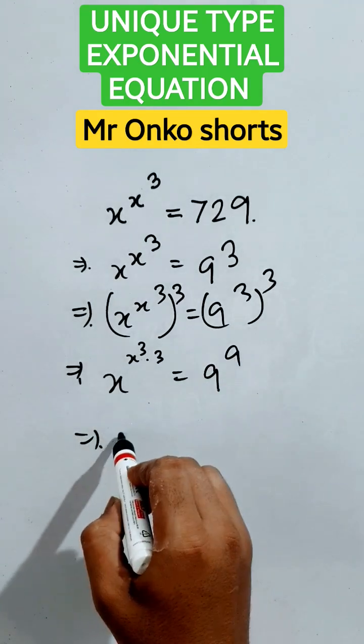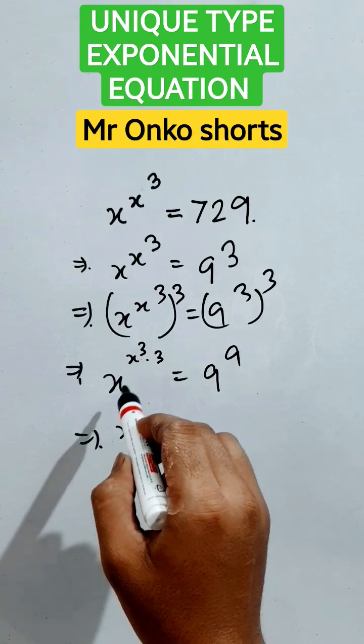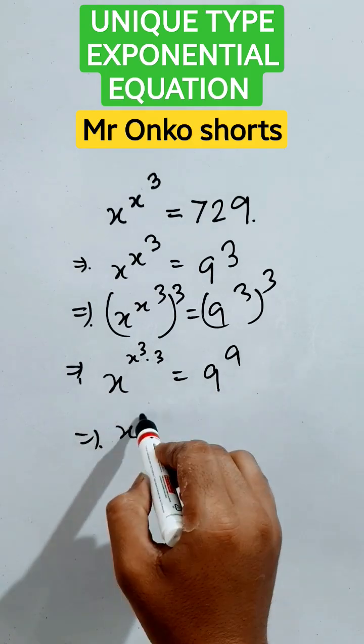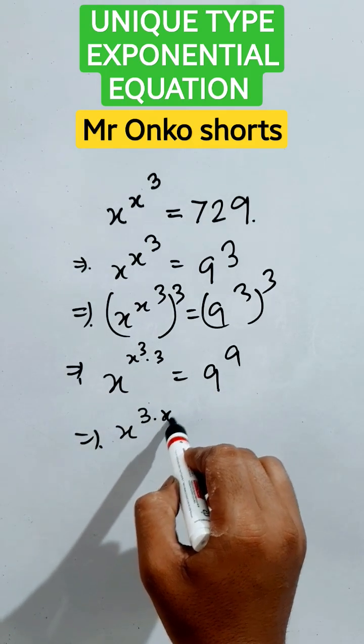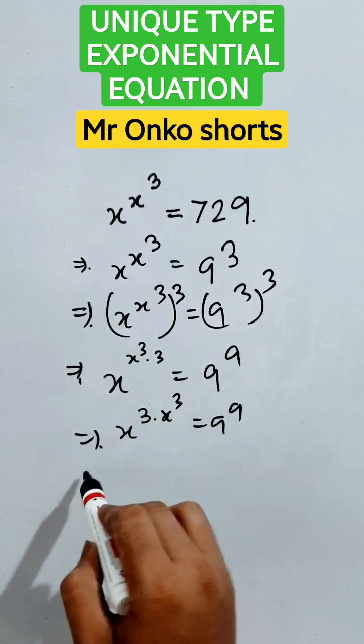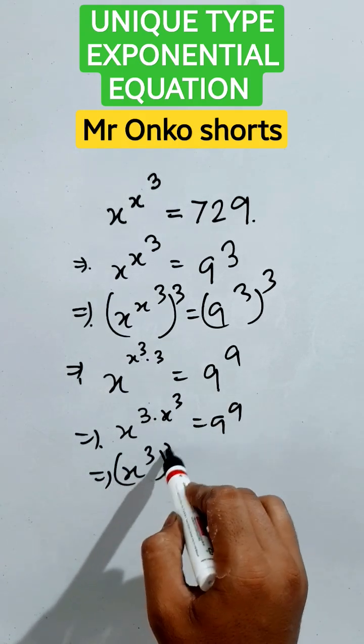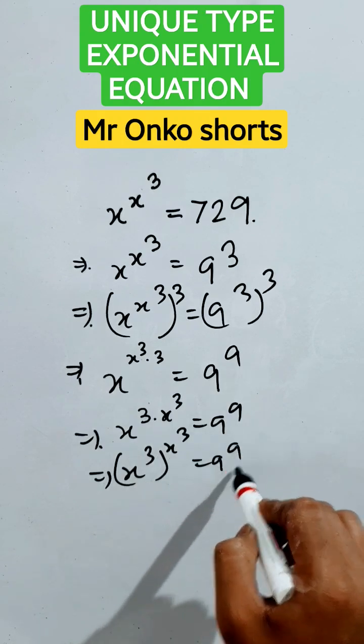Now, here the main trick is it that is x to the power 3 into x cube that is equals to 9 to the power 9. Now, this can be written as x cube whole to the power x cube 9 to the power 9.